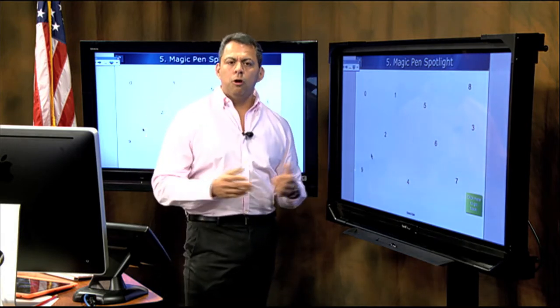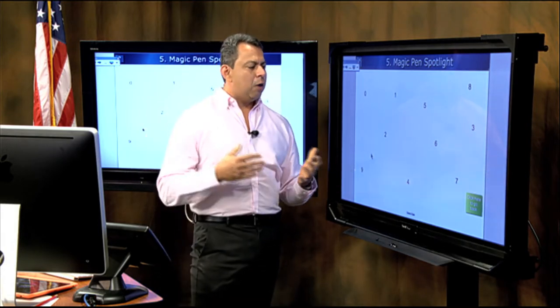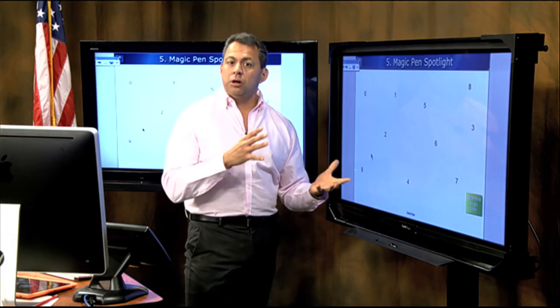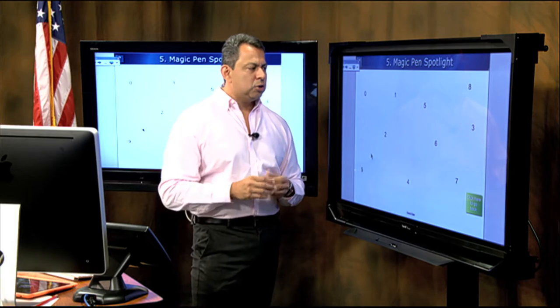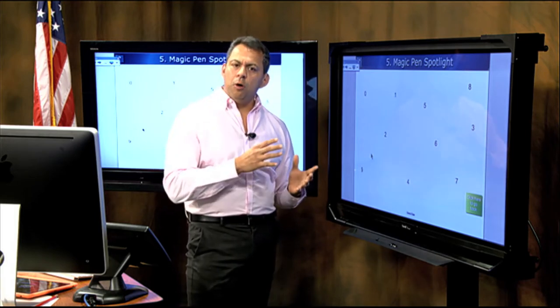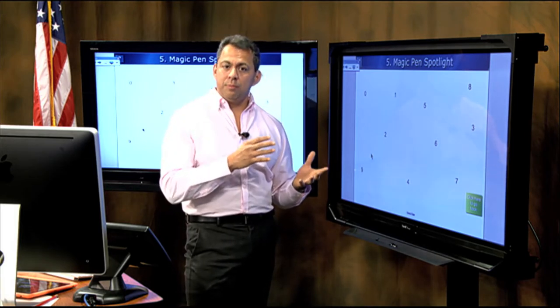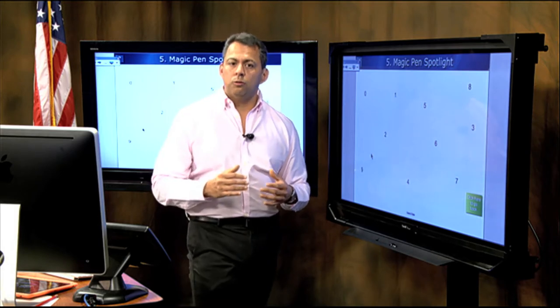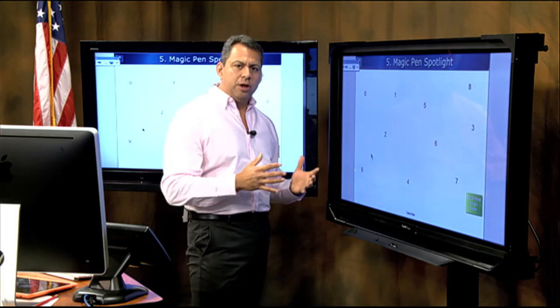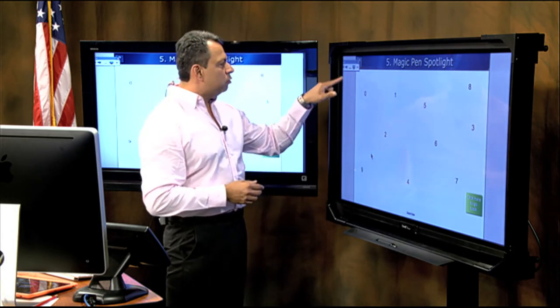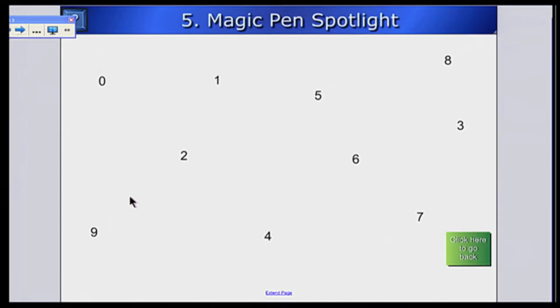Maybe I want to do some addition tables or times tables, and I want the students to select a certain number or to emphasize a certain number I want them to see. To do that, I'm going to simply go to what's called my magic pen and use the spotlight tool feature of that pen. Right now I'm in full presentation mode, but if you notice in my floating toolbar that I have up here, I have three little dots after my forward and reverse arrows. When I click on those dots, a screen opens up.